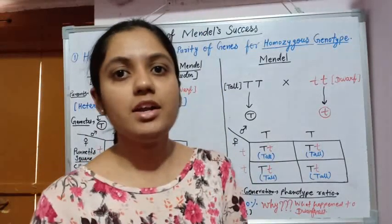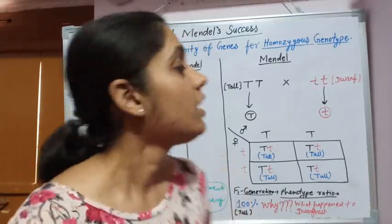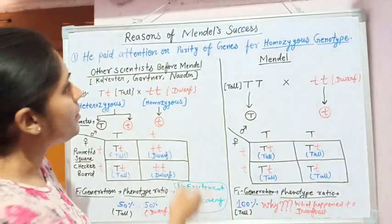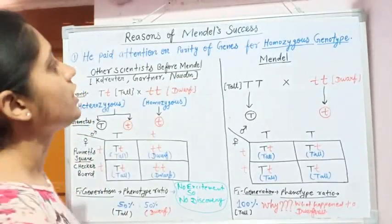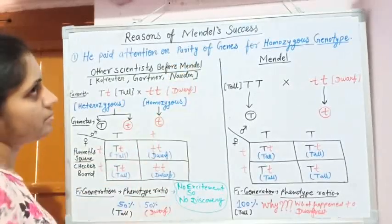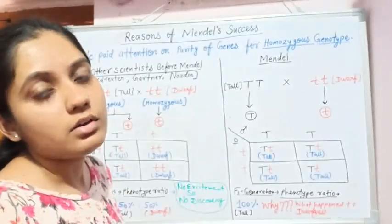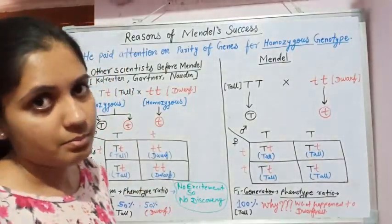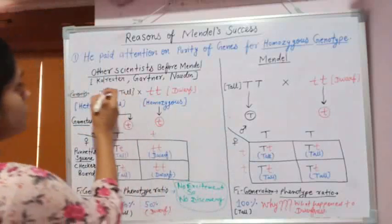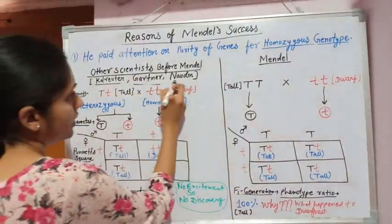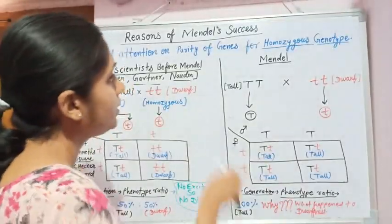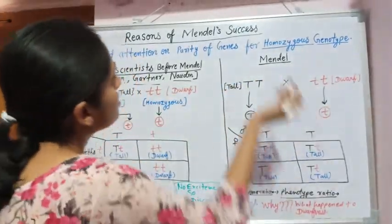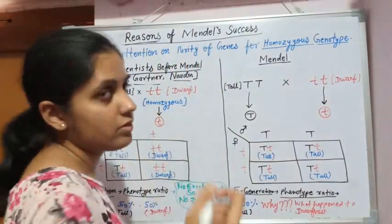Hello friends, welcome again to my channel Asma's Botany. Today we will discuss the reasons for Mendel's success. There were many scientists who did experiments before Mendel but they failed — scientists like Carl, Newton, Gartner, and others. But Mendel got success. Why? Today we will discuss the reasons for it.